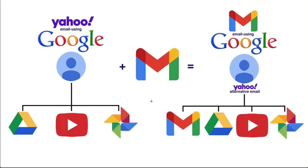Today I want to take a look at what it looks like when you have a third-party email using a Google account and you add Gmail to it. In my example I've used Yahoo as the third-party email address — it's third-party because it is not a Google product. This Yahoo email address is the username for this particular Google account, which has services like Google Drive, YouTube, and Google Photos.